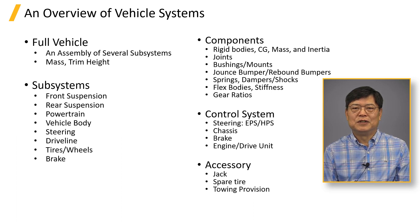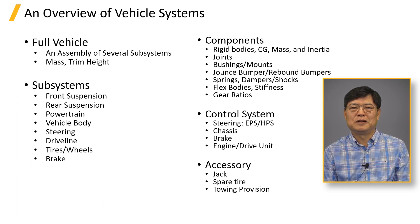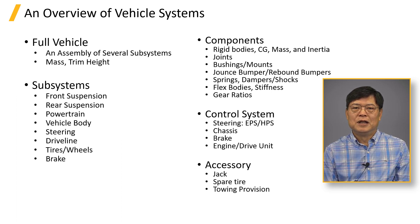The list of vehicle subsystems includes front and rear suspensions, powertrain, vehicle body, steering, driveline, tire and wheels, and brake. The list can grow to have more subsystems such as ballast and trailers. We will go review details of those subsystems soon.